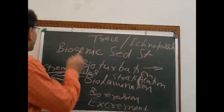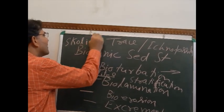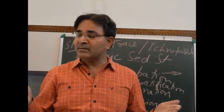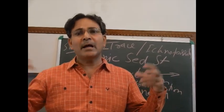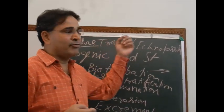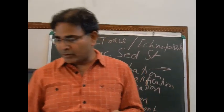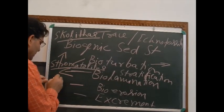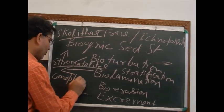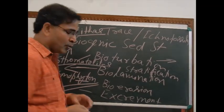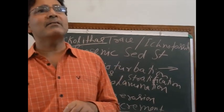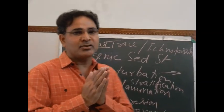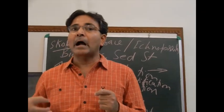The most common trace fossil is Scolithus, also known as pipe rock — it is a columnar structure. Then Thalassinoides is also an ichnofossil, referring to three-dimensional irregular-shaped trace fossils. These are very common trace fossils. The most common stromatolite form is Conophyton, which is cone-shaped and that is why it is named Conophyton. Stromatolites date back to 3.5 billion years. Stromatolites are not body fossils but are very common organic sedimentary structures.